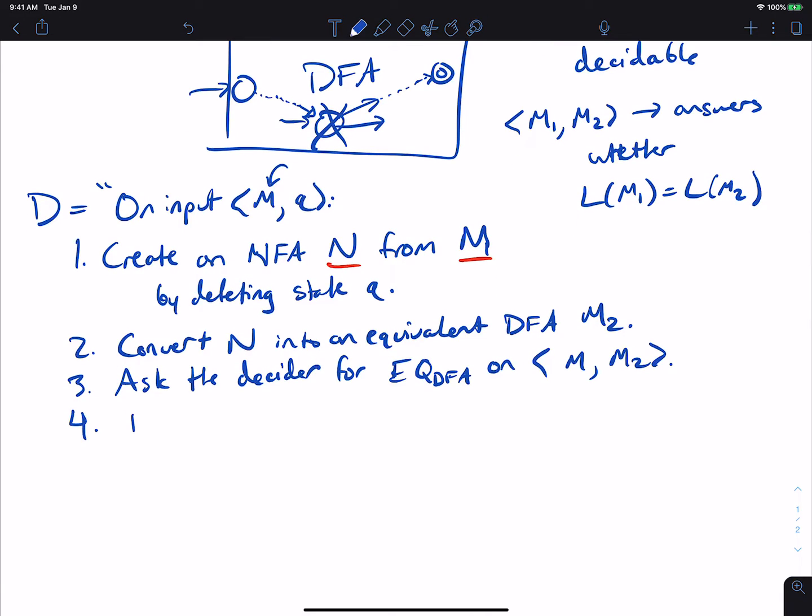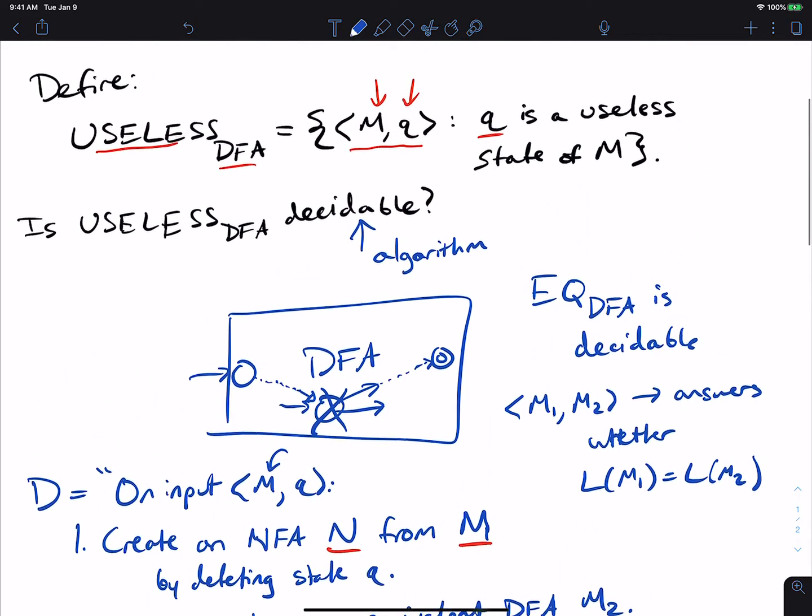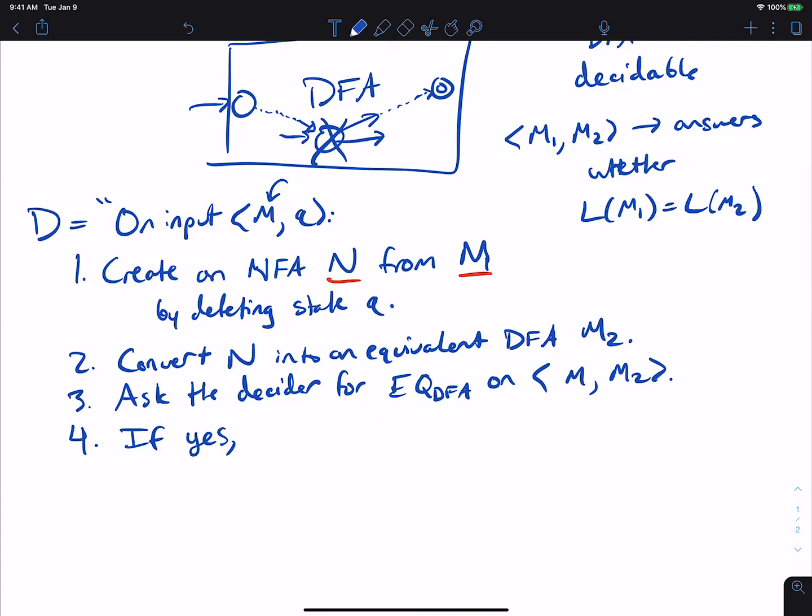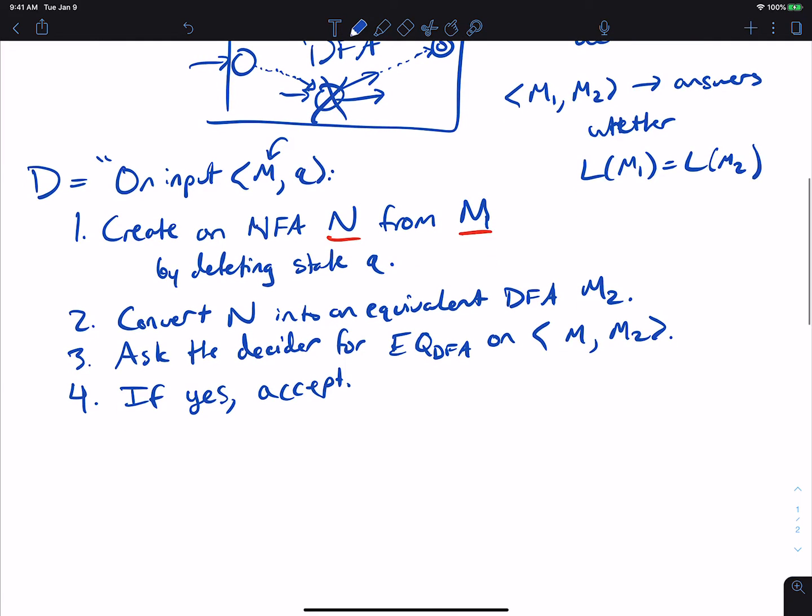If yes, if the decider says they have the same language, that means we were able to delete a state from the machine and we never changed the language, which means by our definition that the state is in fact useless. So we should accept here. Remember, we always have to say accept or reject. Otherwise, that means that the language did change, which means it's not a useless state anymore. Therefore we should reject.